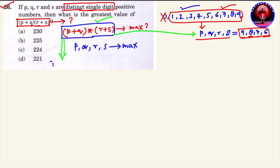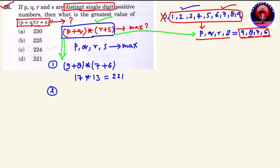First combination: P = 9, Q = 8, R = 7, S = 6 लेते हैं। (9+8) × (7+6) = 17 × 13 = 221 आ जाएगा। Next combination: 9 को 7 के साथ लेते हैं, तो (9+7) × (8+6) = 16 × 14 = 224।